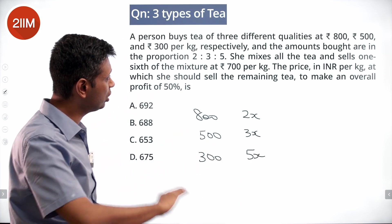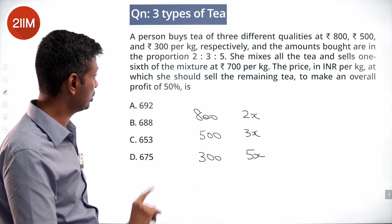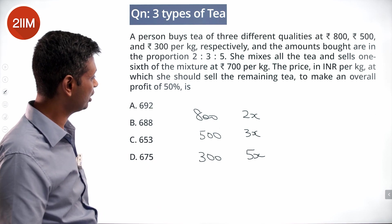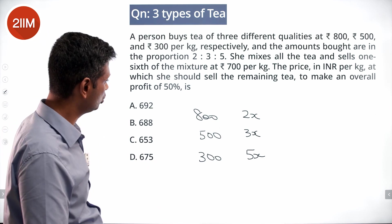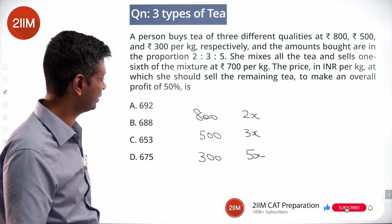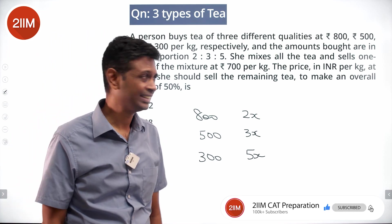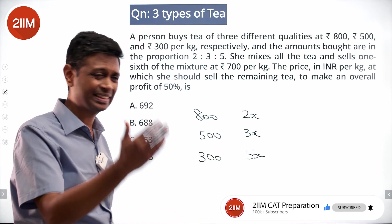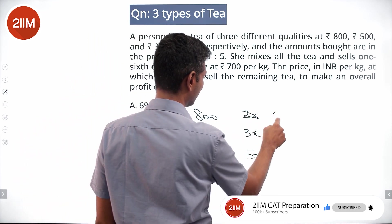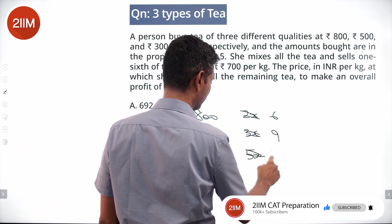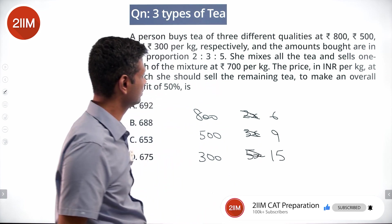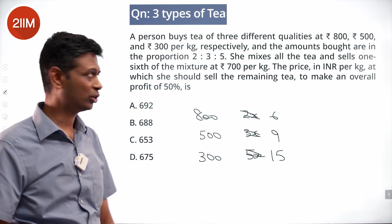She mixes all the tea and sells one-sixth of the mixture at 700 per kg. 2 plus 3 plus 5 is 10. I want it to be one-sixth, so I'm going to say 6 of this, 9 of this, 15 of this, so that the one-sixth number works fine.